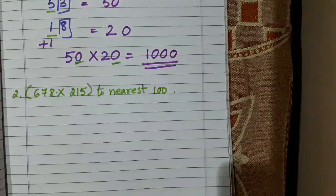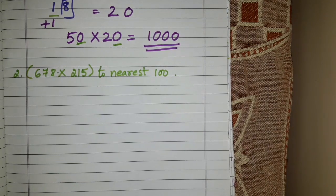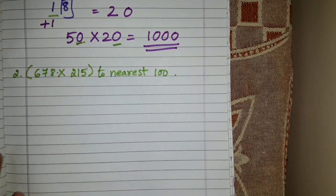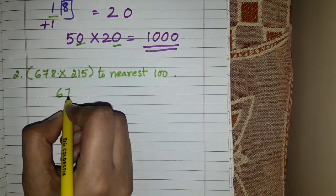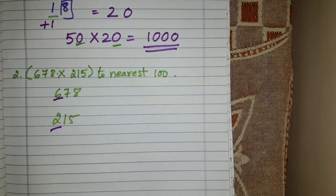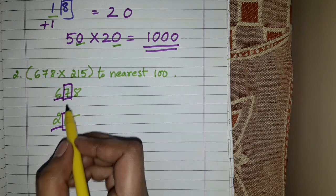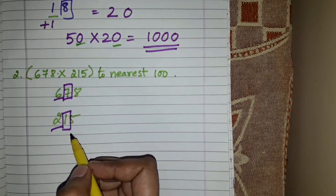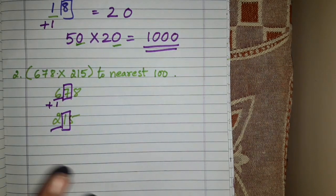Now this is a second case. Two numbers are given: 678 and 215. We have to find the product and they have to be rounded off to nearest hundred. Let's write the numbers separately and round them off to the nearest hundred place value. This and this belong to the hundreds place, so we look at the digit on the right-hand side — 7 and 1. Now 7 is greater than 5 and 1 is less than 5.